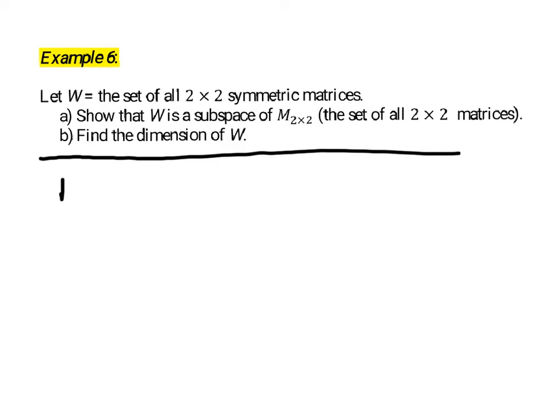So any matrix in W is going to have this form. A symmetric matrix can have anything along the main diagonal, so I'm going to put an A and a D in their usual positions. The thing that's special about symmetric matrices is that the corresponding entries across the main diagonal are equal, or you have mirror image across the main diagonal.